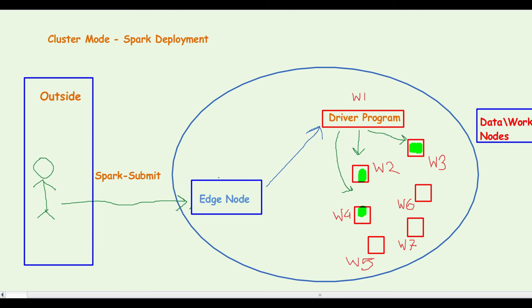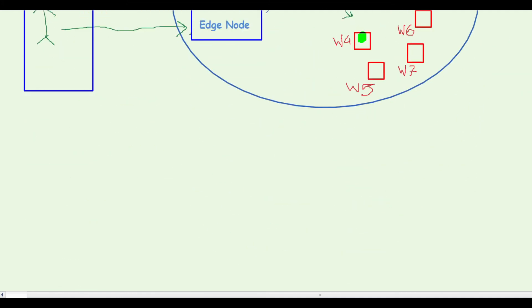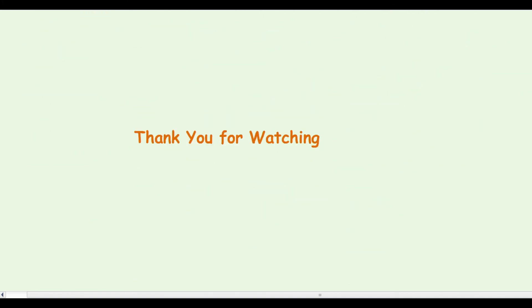This ensures that sufficient resources can be allocated to the respective Spark job. This specific deployment mode is preferred in production because it takes care of the resource allocation smartly, and hence there are less chances of memory issues. I hope it's clear. So thank you for watching.